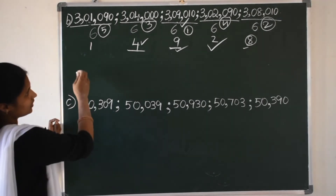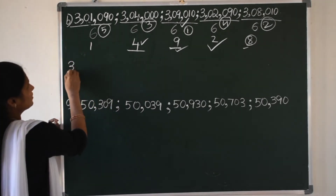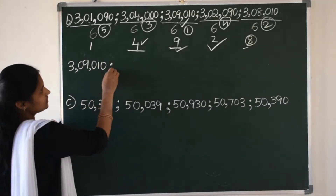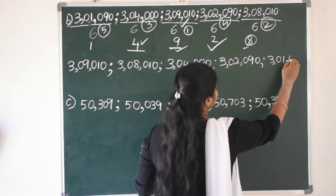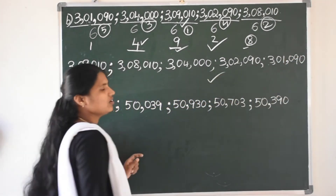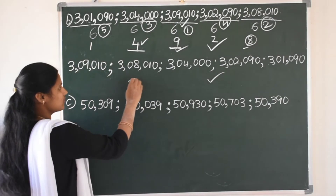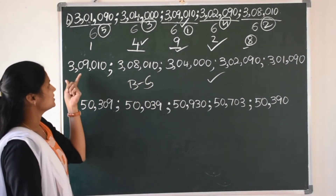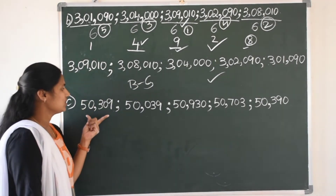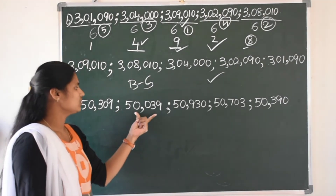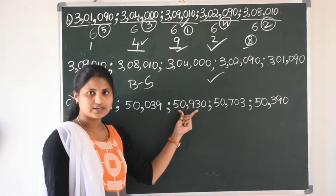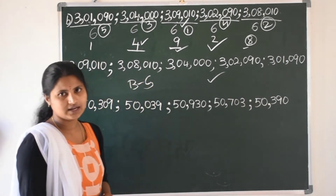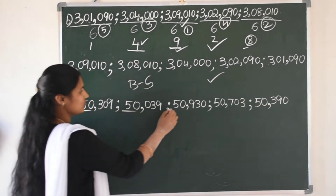So we can write 3 lakhs 2090 in fourth place and 3 lakhs 1090 in fifth place. Now arrange these numbers in descending order. This is descending order — we have arranged numbers from big to small. Now see this question. Here: 50,309; 50,039; 50,930; 50,703; 50,390. So in the thousands period we have 50,000 in all numbers.